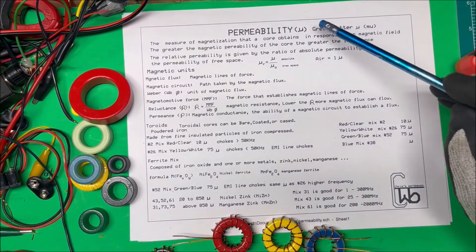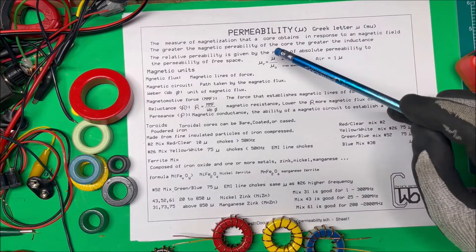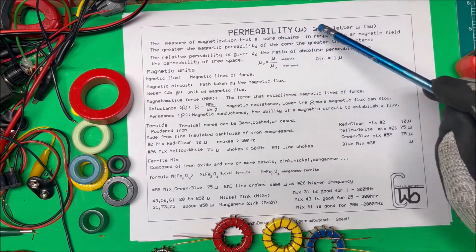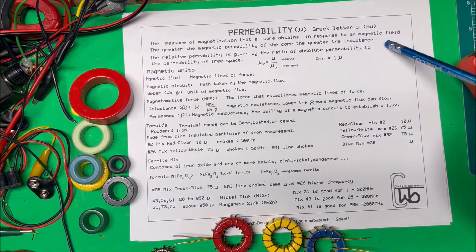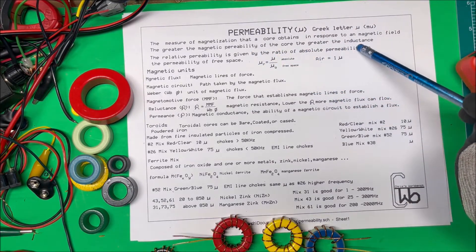Let's talk about permeability. The symbol is mu, the Greek letter U, and it's the measure of magnetism that a core can obtain in response to a magnetic field. The greater the magnetic permeability of a core, the greater the inductance.